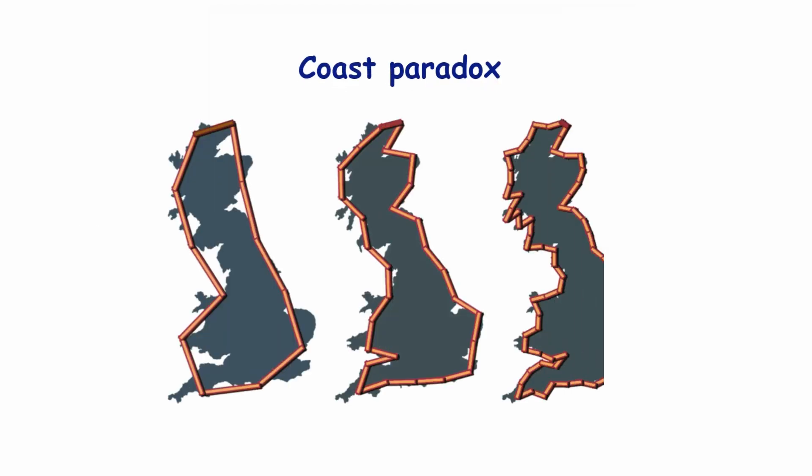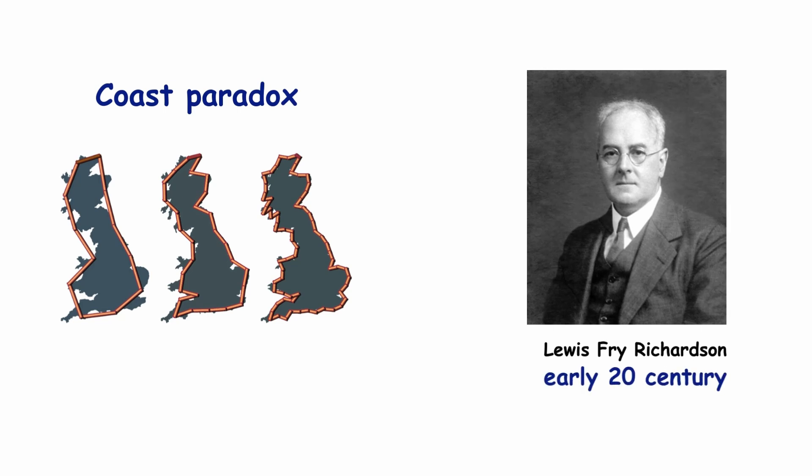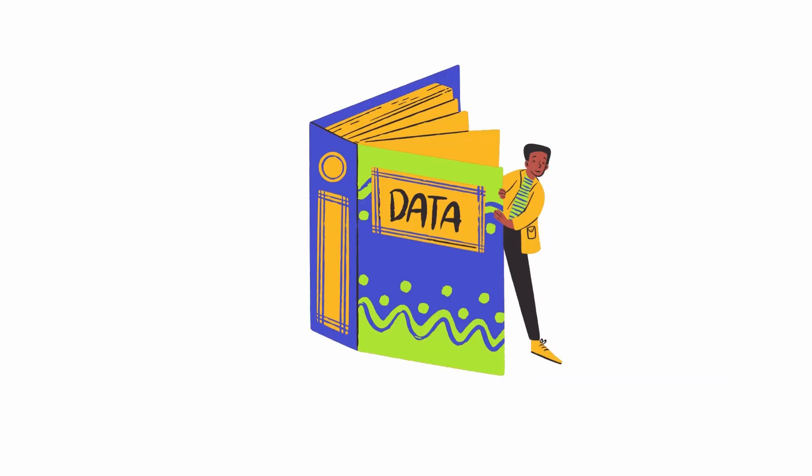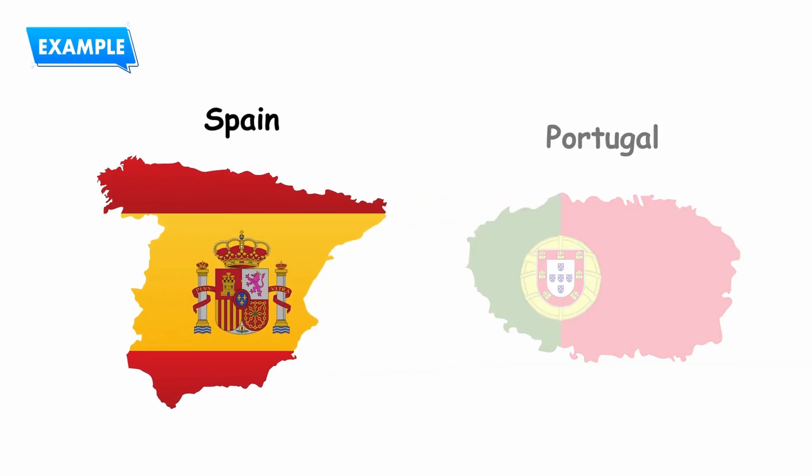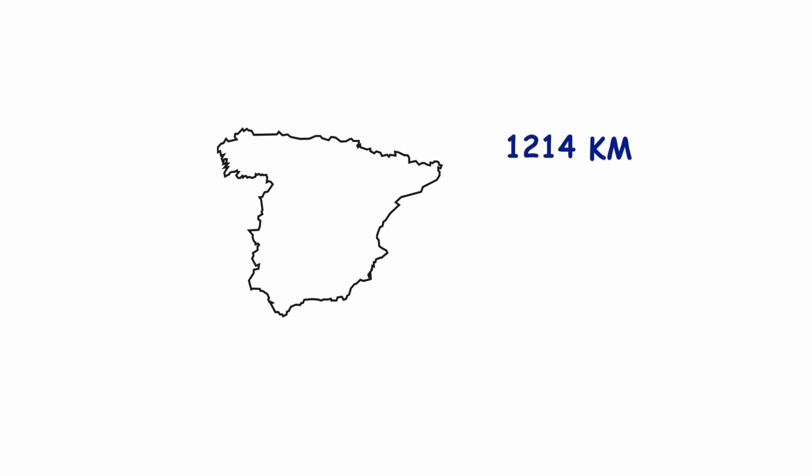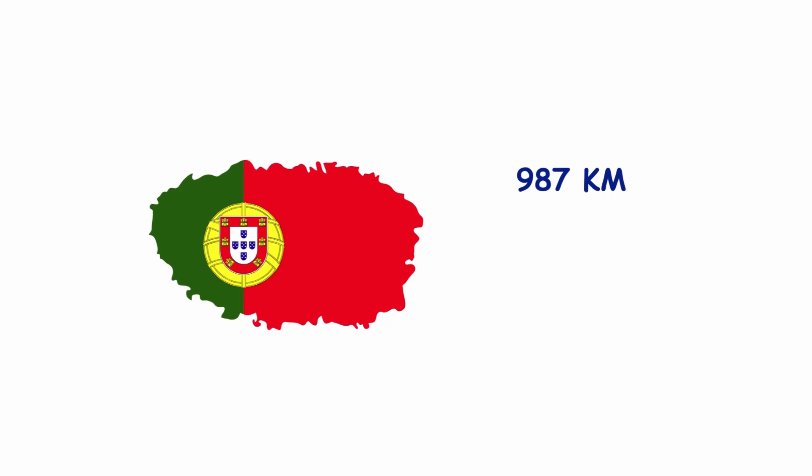The coast paradox was first demonstrated by Lewis Fry Richardson in the early 20th century. When collecting data, it was found that different sources provided disparate data. For example, Spain estimated its border with Portugal to be 1,214 kilometers, while Portugal, on the other hand, said it was only 987 kilometers.